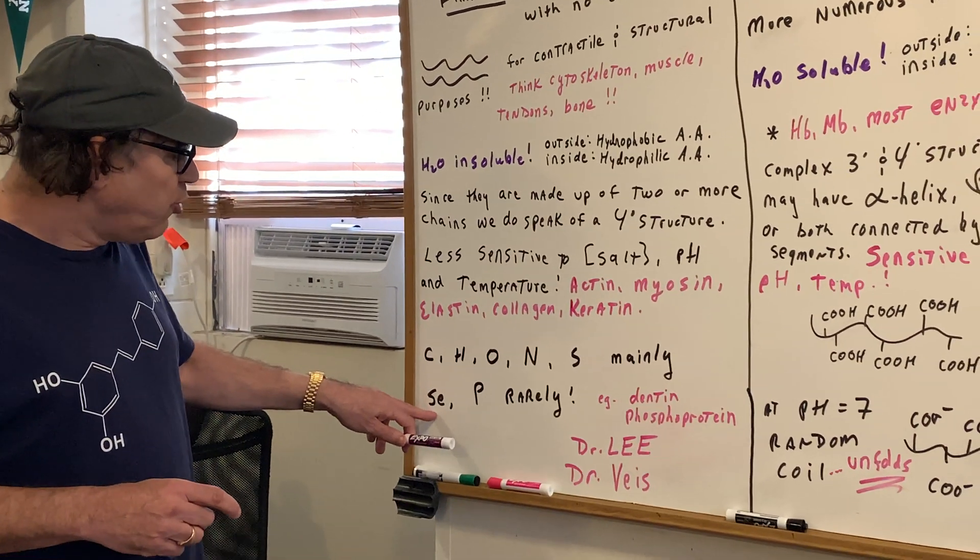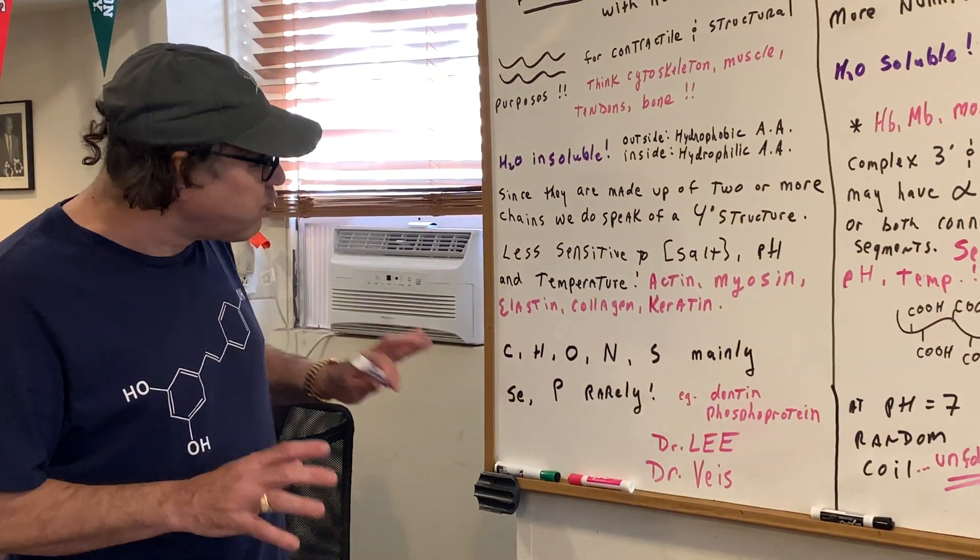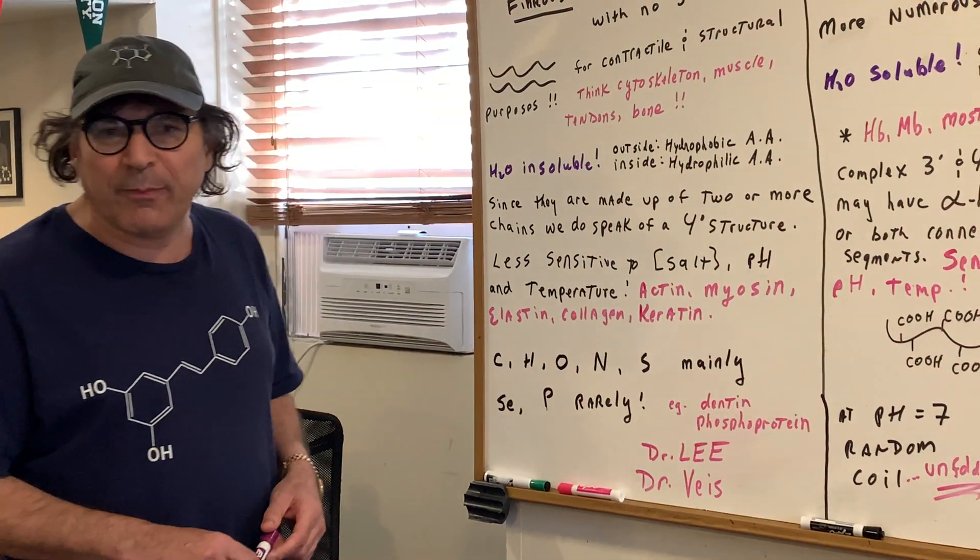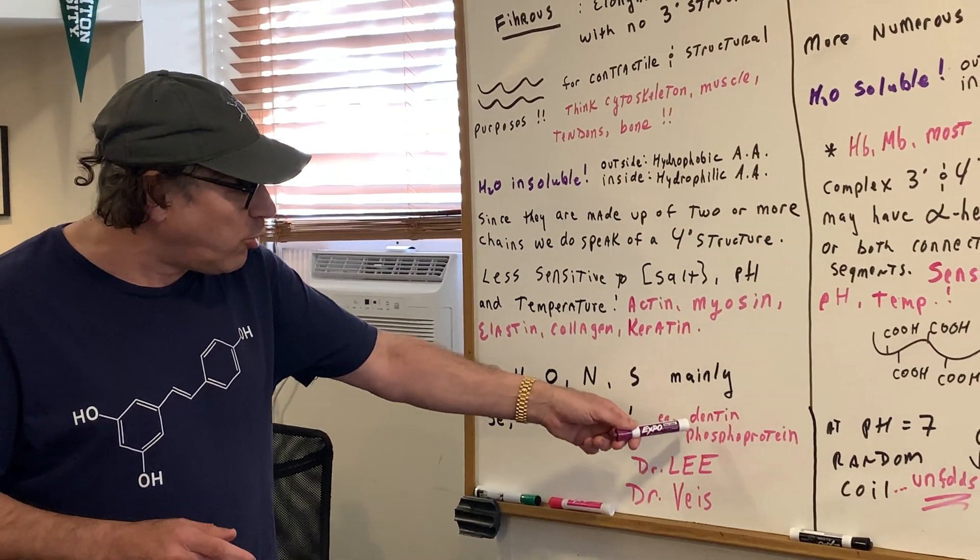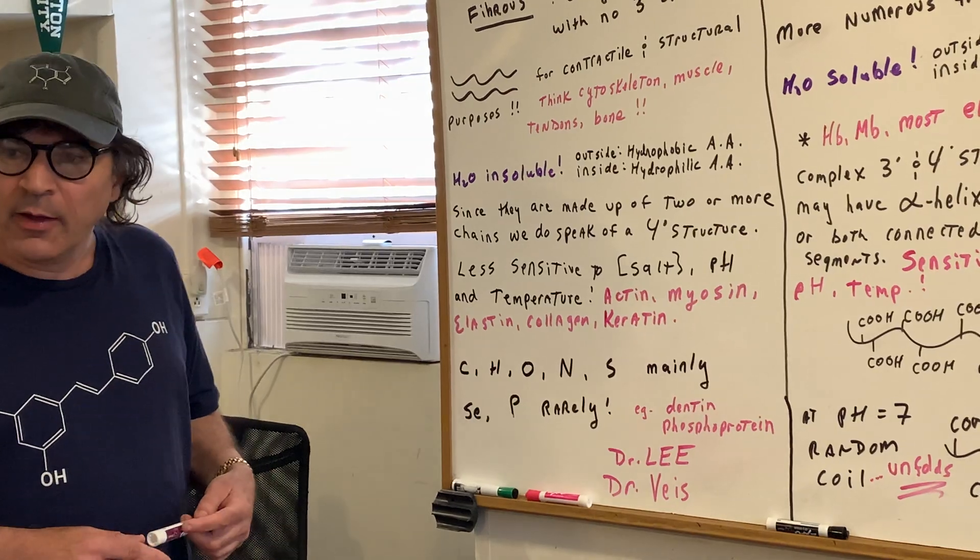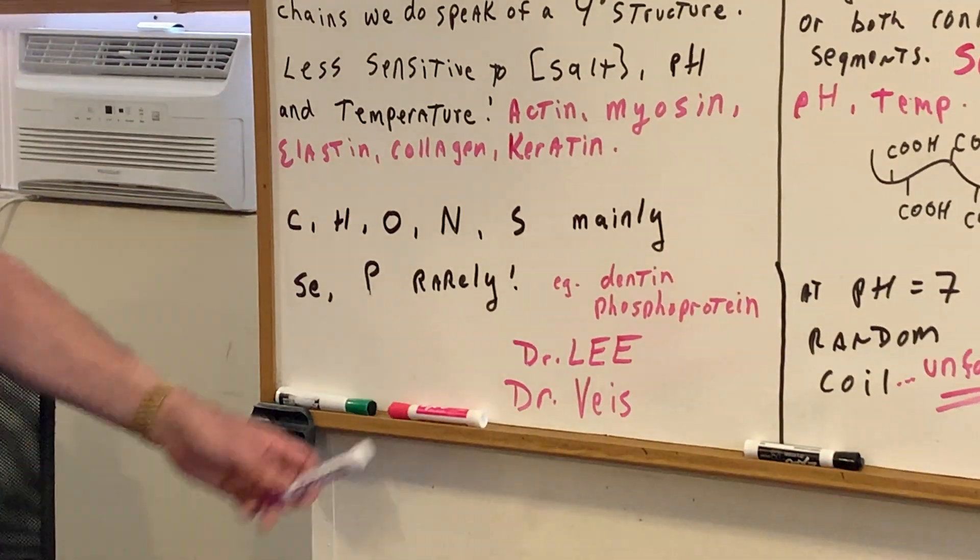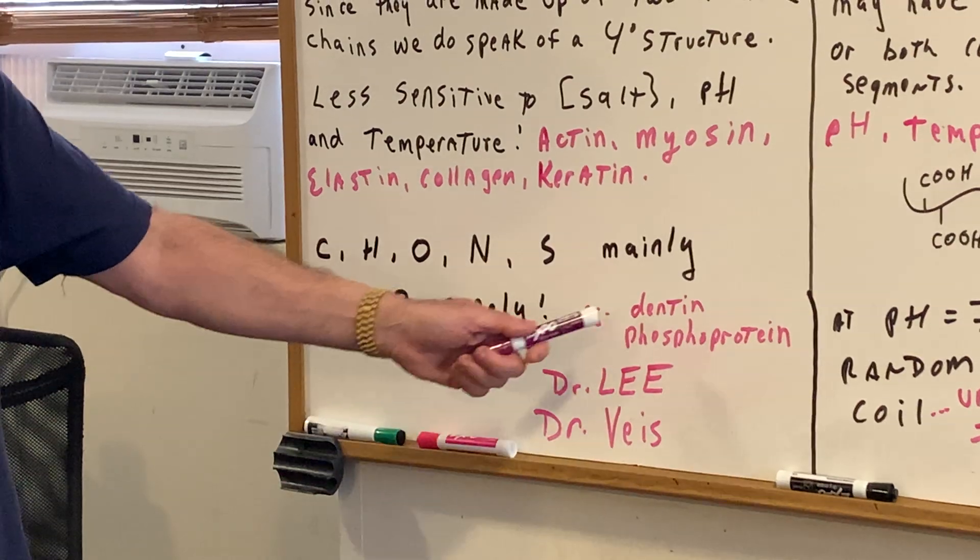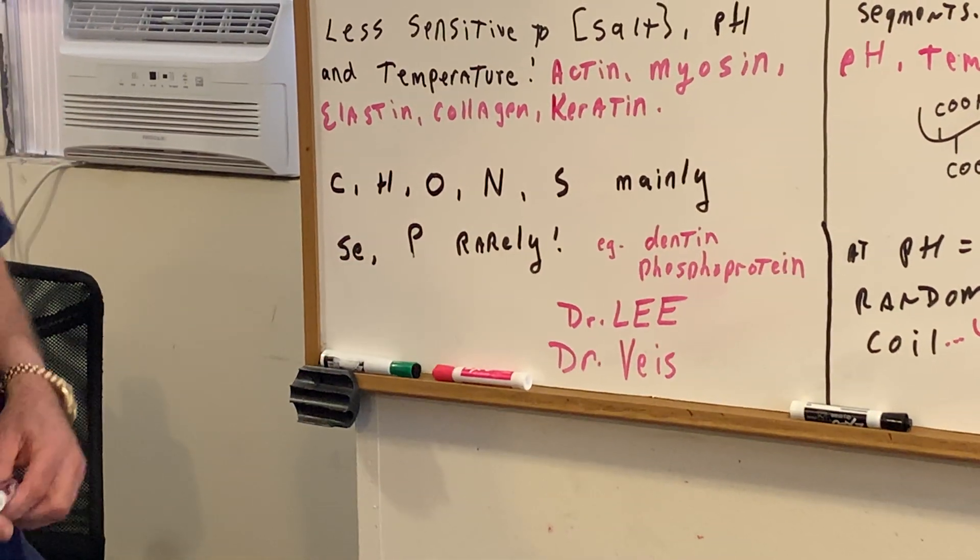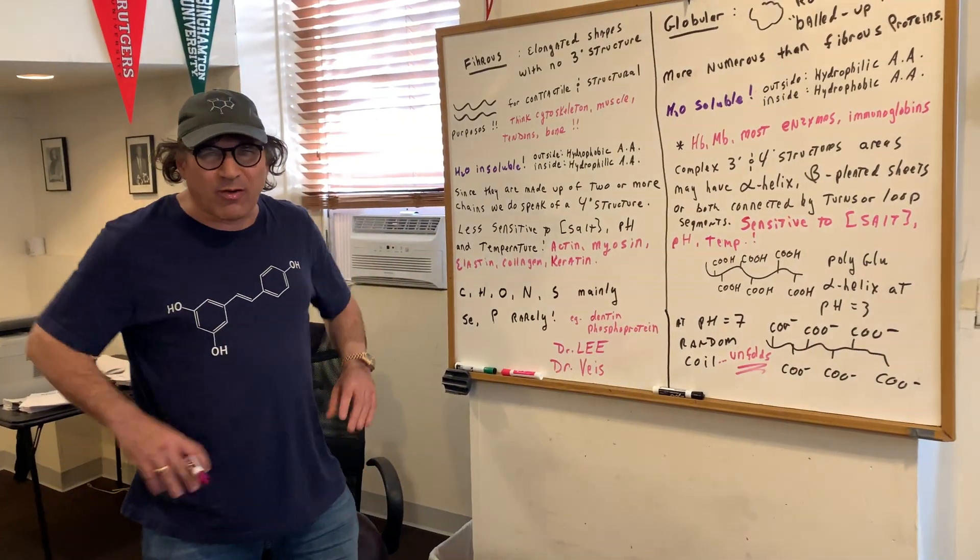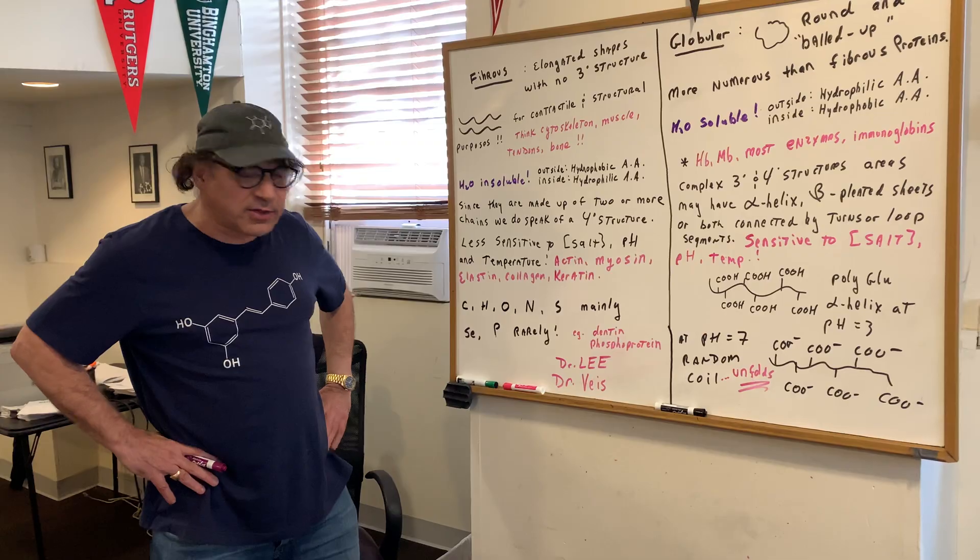Now rarely, though, you may come across a protein with the element selenium in it. That's rare, and also extremely rare would be phosphorus. I don't think you'll see that on the DAT, but I do want to just bring that up because there is a protein called dentin phosphoprotein. The two PhD - I actually looked at their PhD paper - Dr. Lee and Dr. Vase, they wrote it on dentin phosphoprotein, a protein that does have a P atom in it. But that's rare though. So for the DAT, I don't think I would be that concerned with knowing that. But C, H, O, N, S is where you're gonna find in the proteins. These guys are rare.